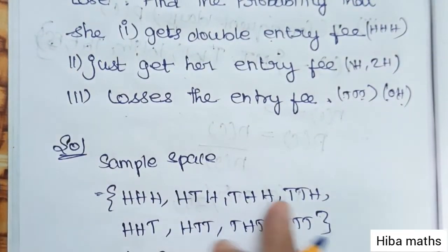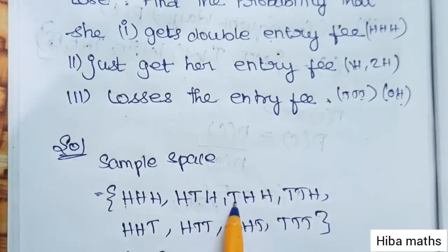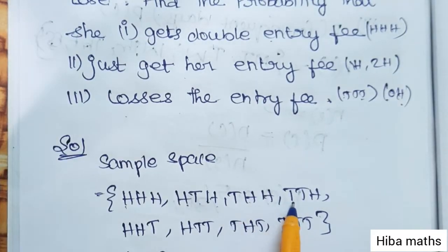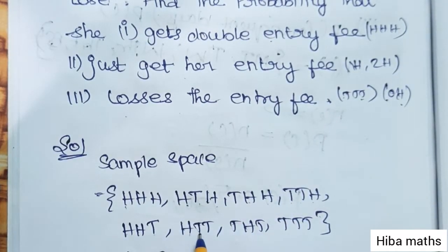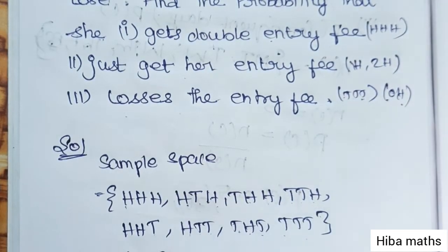The sample space for 3 coins is: HHH, HTH, THH, TTH, HHT, HTT, THT, TTT. So the total number of outcomes in the sample space is 8.